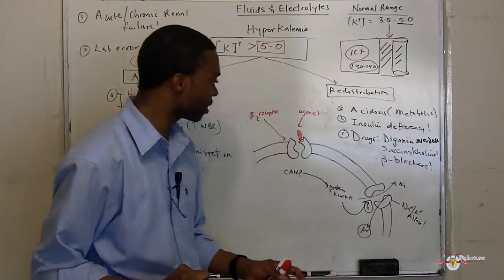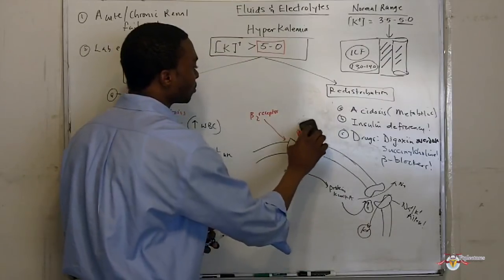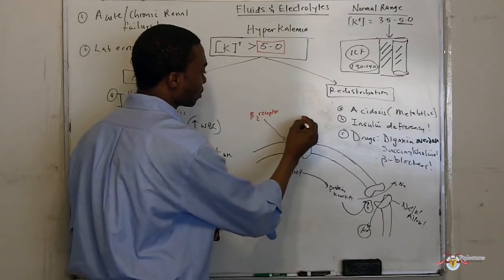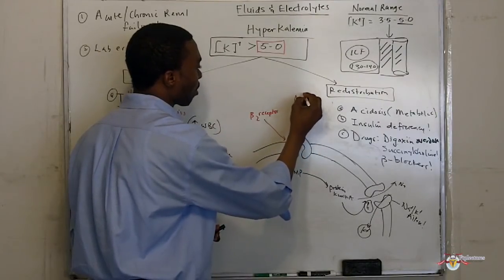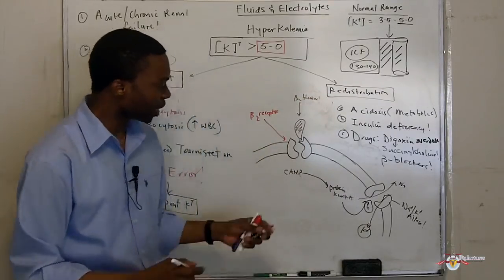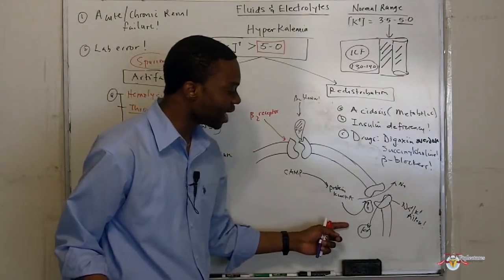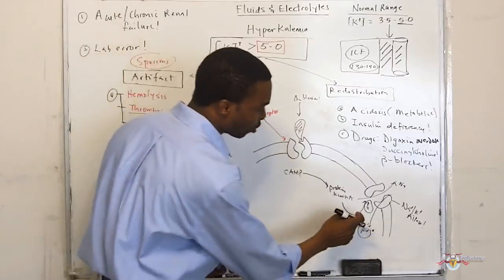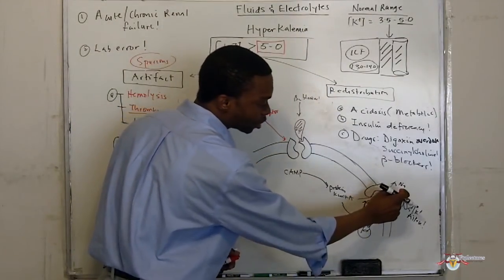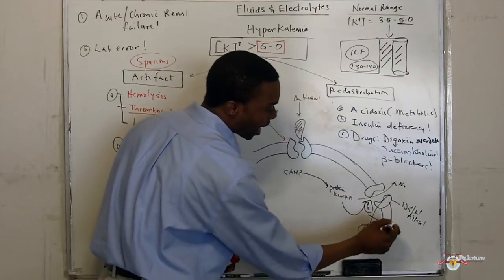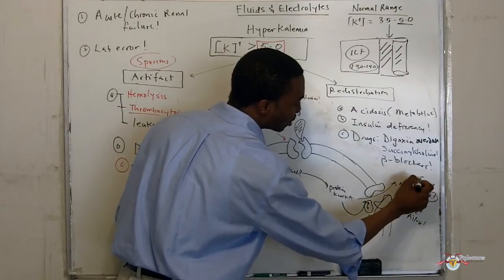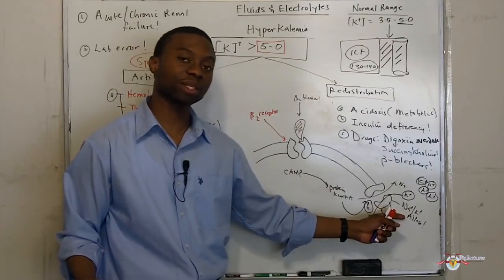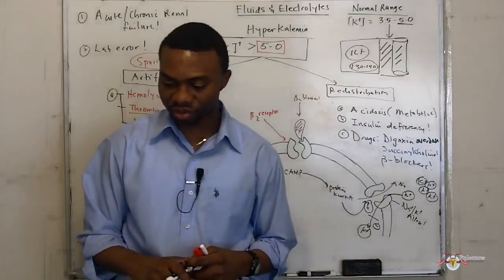However, when you give a patient a beta blocker, it blocks the receptor so you cannot activate cyclic AMP, cannot activate protein kinase A, and therefore cannot phosphorylate the sodium-potassium ATPase pump. This prevents sodium from being pumped out and prevents potassium from being pumped in. Potassium has to stay outside of the cell — and since potassium normally gets pumped in, blocking the pump means we develop hyperkalemia.